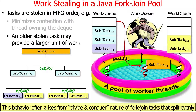The other cool thing about stealing from the back is that the task you're stealing typically has a larger unit of work. That's because we typically use fork-join pools in a situation where we start with a big region of data, and every time we fork, we split it in half.